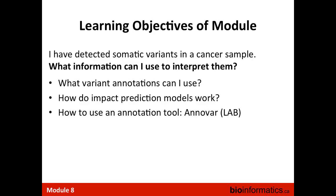The learning objectives of this module: having performed a sequencing experiment, you may have detected dozens, hundreds, or even thousands of genome variants, and you really want to interpret them in the context of cancer biology. The module covers understanding what variant annotations are available, how to predict the impact of a particular genome variant using machine learning tools and mathematical models, and how to use the annotation tool ANOVAR to translate genomic coordinates to protein coordinates and understand what variants may be doing in the context of protein function.